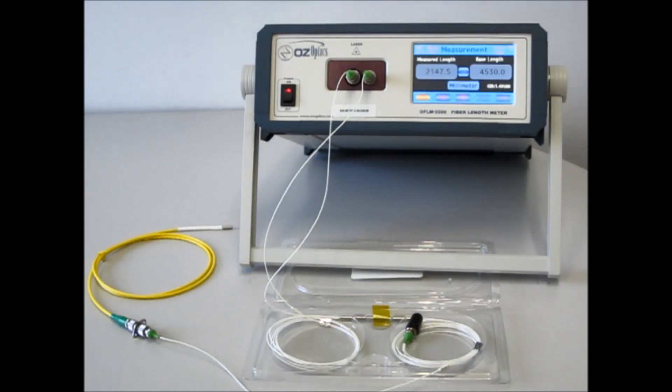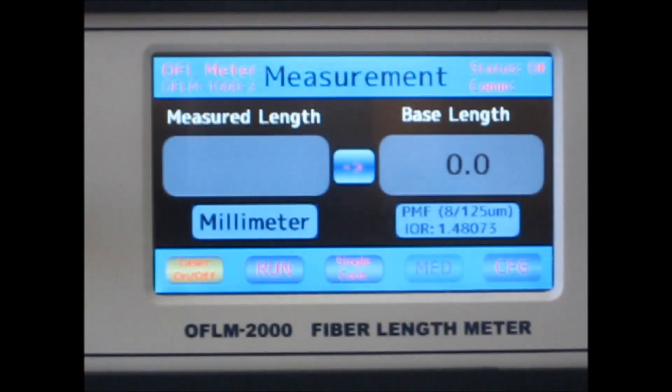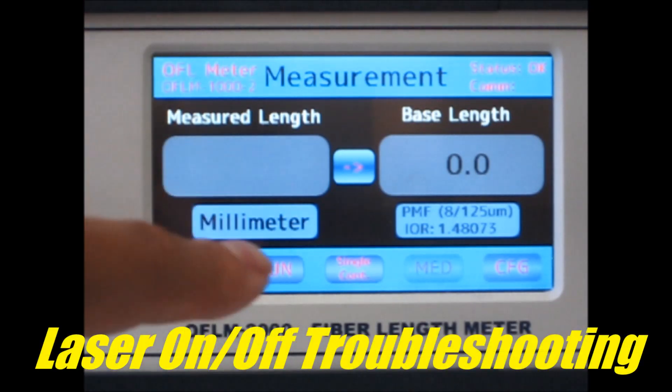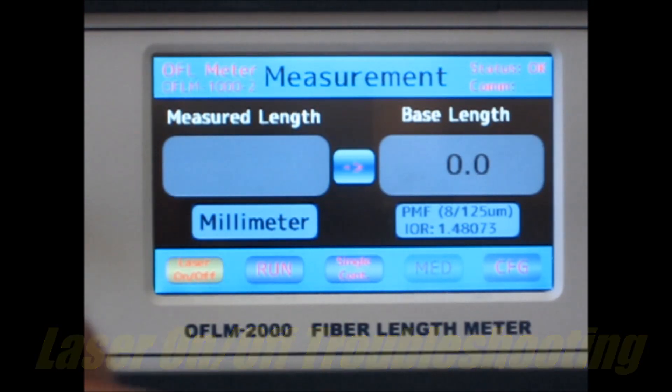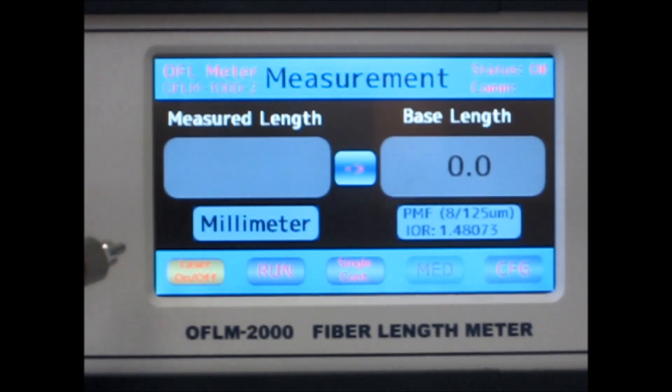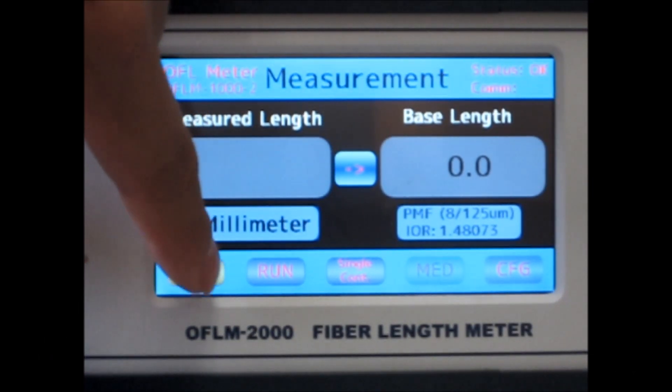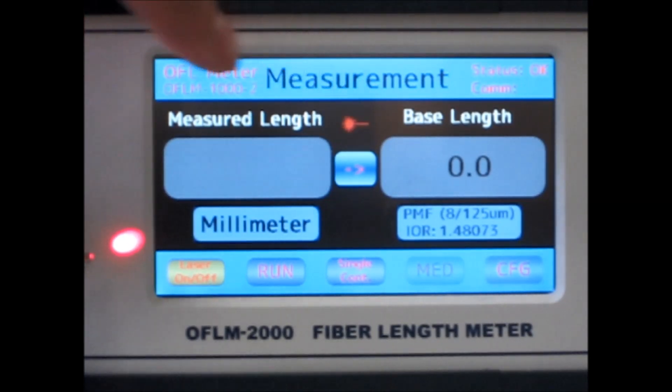So far we have avoided the leftmost button, the laser on-off button. This should only be used for troubleshooting purposes to see if there are any breaks in your fiber. It is not needed for measurements. When we push the laser on-off button, a continuous beam of red light is emitted and the laser warning symbol appears on the screen. When we push the button again, the beam and symbol turn off.